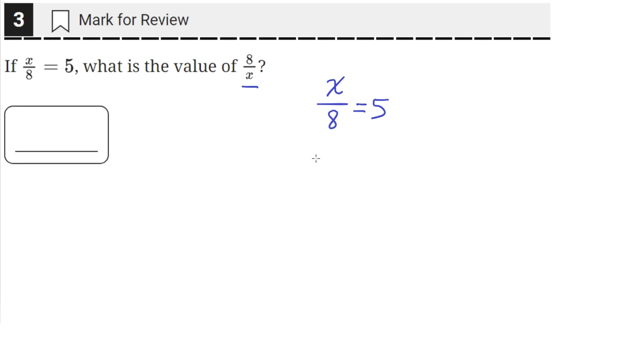So we multiply both sides by 8. This will give us x equals 8 times 5. By multiplying both sides by 8, 8 over 8 cancels out, and 8 times 5 is just 8 times 5.